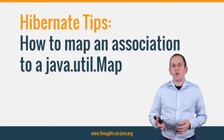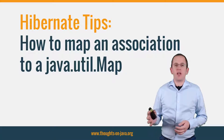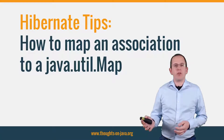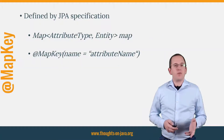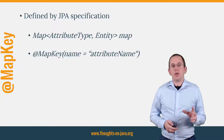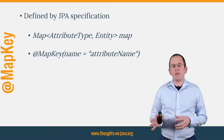One of my readers was in that situation when he sent me this question: I need the elements of a mapped association as a java.util.Map. Do I have to implement a helper method for that, or can Hibernate do that for me? If you want to use an entity attribute as the map key, you can use JPA's @MapKey annotation to map the association to a java.util.Map.